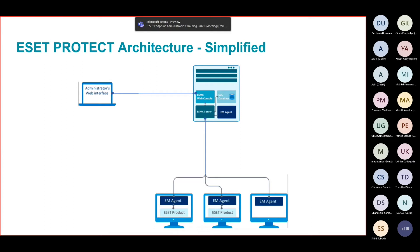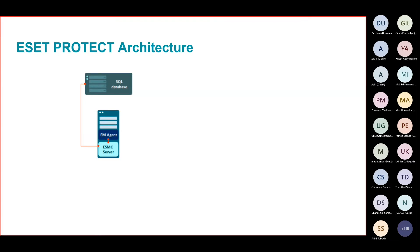The EM Agent talks to the server — this is how communication goes up and down. The server sends instructions which get executed through the EM Agent, and the EM Agent keeps the server informed of everything being conducted. Inside the ESET Protect server, there is a lot of information being collected, so we need a database. It could be a Microsoft SQL Server — typically the Express edition — or a MySQL database. If it's a Windows server, you'll likely use MS SQL Express; if it's the virtual appliance, it comes with MySQL.